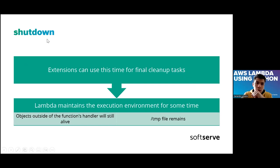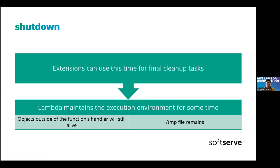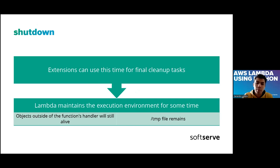If your Lambda didn't receive any requests, AWS will kill it. And if another request arrives, all the process starts again. The extensions use this shutdown time to clean up all the memory and state. Lambda will maintain this execution environment for some time, but we can't configure this time, so we don't know exactly how long our Lambda will be alive.